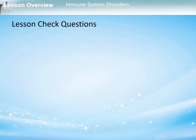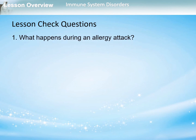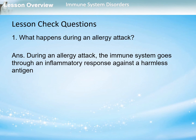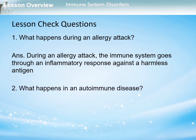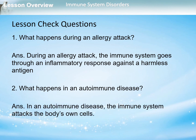Let's answer some lesson check questions. What happens during an allergy attack? During an allergy attack, the immune system goes through an inflammatory response against a harmless antigen. What happens in an autoimmune disease? In an autoimmune disease, the immune system attacks the body's own cells. Thank you for watching — have a nice day.